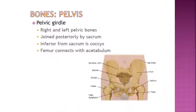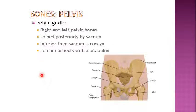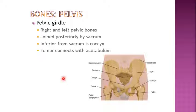Looking at the bones of the pelvis: you have the right and left pelvic bones, joined posteriorly by the sacrum — the sacrum is right in the middle. Inferior to the sacrum is the coccyx, also known as the tailbone. Then you have the femur connecting to the acetabulum; the femoral-acetabular joint is where you have the connection, and that is your actual hip joint. We'll be talking about the bones and bony landmarks of the pelvis, beginning at the sacrum.